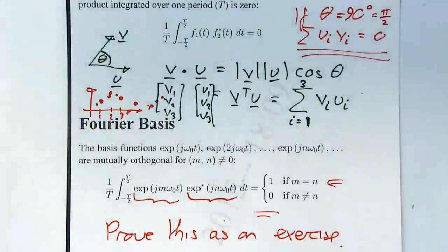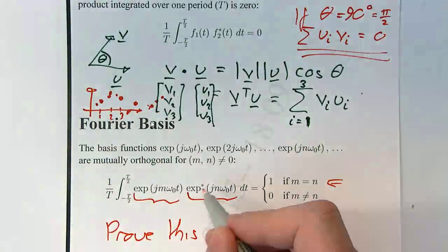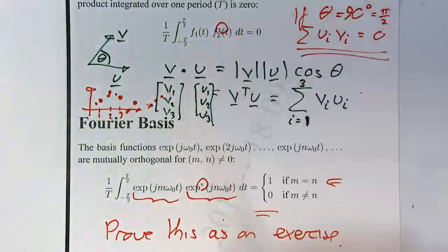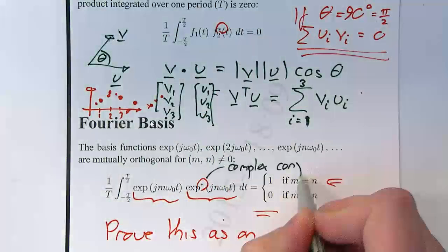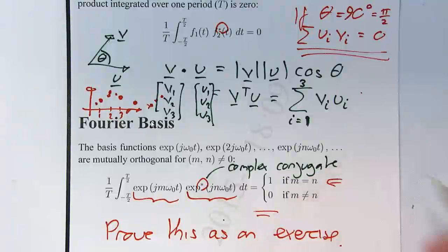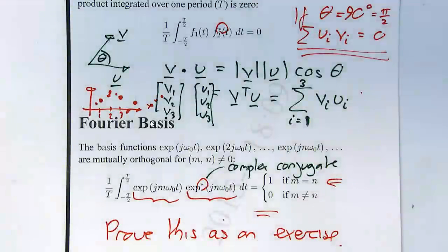There's a conjugate sign which crops up in here — a complex conjugate. Some people put a bar above a symbol to indicate the complex conjugate.